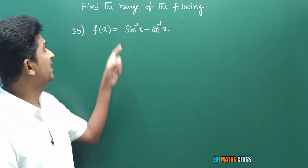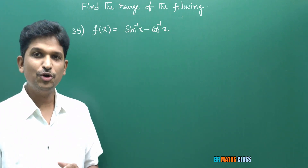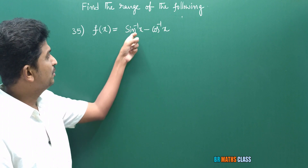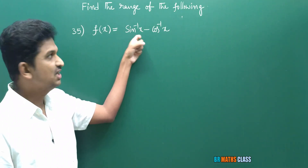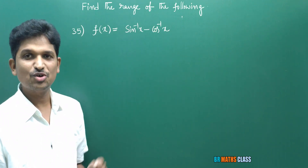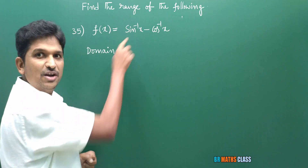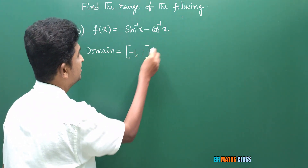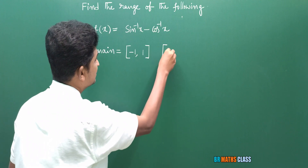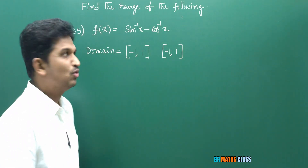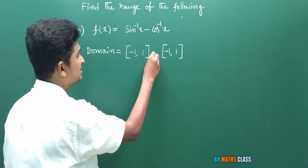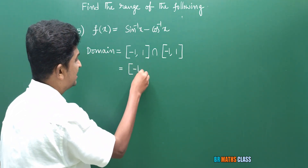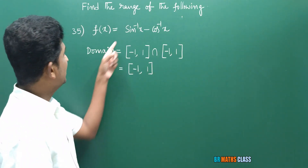Observe question number 35. We need to find the range of f(x) = sin⁻¹x − cos⁻¹x. Before calculating the range, calculating the domain is important. This is of the form h(x) − g(x). The domain of sin⁻¹x is [−1, 1] and the domain of cos⁻¹x is also [−1, 1]. The domain of sin⁻¹x − cos⁻¹x is the intersection of these two intervals, which is the closed interval [−1, 1].